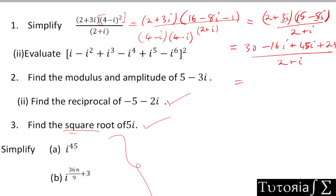We simplify the numerator by grouping real parts: 30 + 24 = 54, and combining -16i + 45i = 29i. So we have (54 + 29i) over (2 + i).